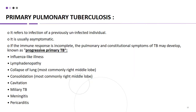Primary pulmonary TB refers to infection of a previously unaffected individual. It is usually asymptomatic. But if the immune system is incomplete, pulmonary and constitutional symptoms may develop — this is known as progressive primary TB. Symptoms may include influenza-like illness, lymphadenopathy, collapse and consolidation of the lung, predominantly in the right middle lobe, cavitation, Miliary TB, meningitis, and pericarditis.